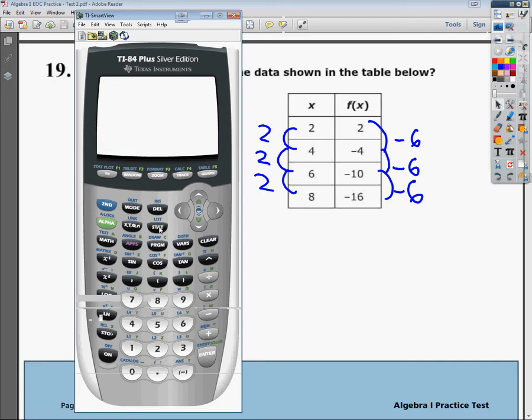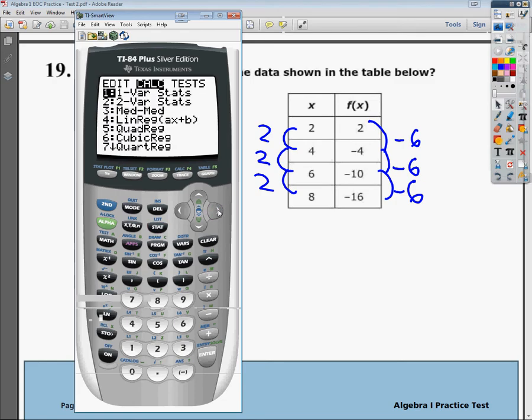Then I'm going to go back into the list section again. I can hit the stat button, go over to calc, because that's where you do calculations, and you're going to go down to number four to do a linear regression. That's what linreg means. It even has the mx plus b form, except they like to use the letter a as opposed to m.